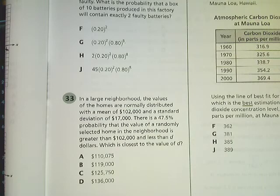There is a 47.5% probability that the value of a randomly selected home in the neighborhood is greater than $102,000 and less than some amount of money. What is the closest to the value of D?